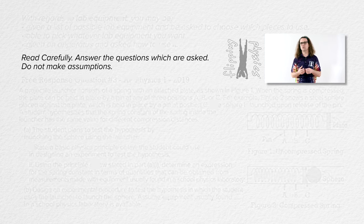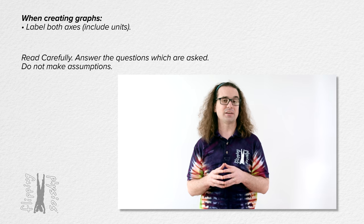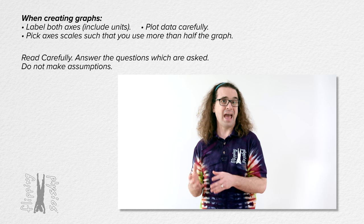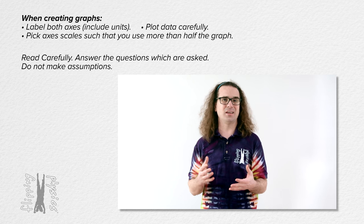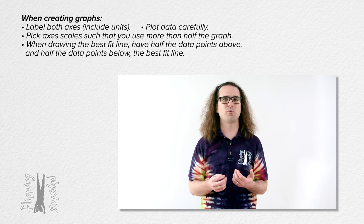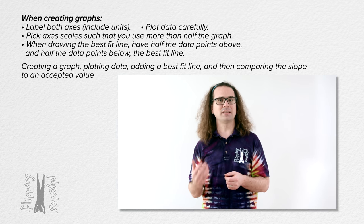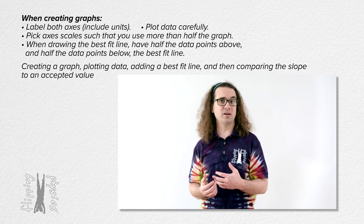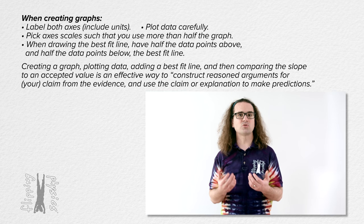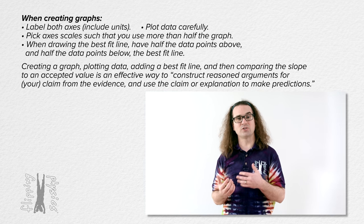Chances are very good you will be required to create a graph and plot data on that graph. Label both axes and include units. Plot the data carefully. Pick an axis scale such that you use more than half the graph — do not plot all the data in one corner. When drawing the best fit line, a good approximation is to have half the data points above and half below the best fit line. Creating a graph, plotting data, adding a best fit line, and comparing the slope to an accepted value is an effective way to construct reasoned arguments for your claim from the evidence.